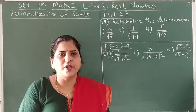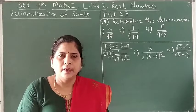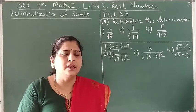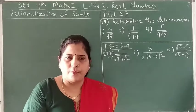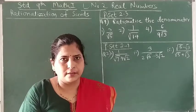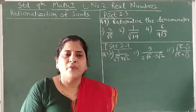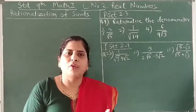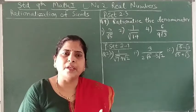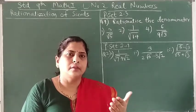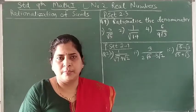Welcome to this 11th video of Real Numbers for standard 9. In previous videos we have seen what is a surd, how to write its simplest form, how to compare surds, and how to do operations on surds. Whenever we have got the answer, it is customary to write the denominator of the surd as a rational number.